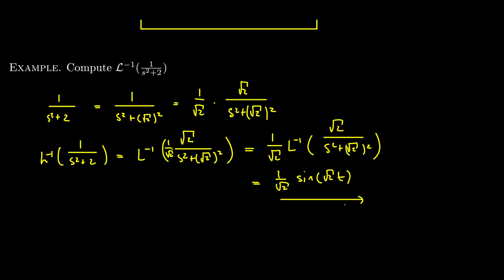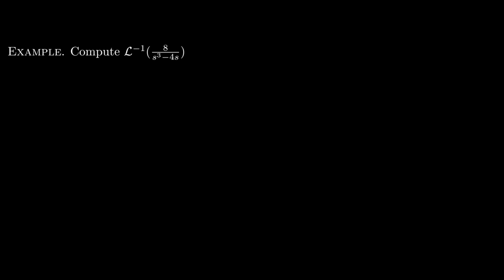This illustrates the general approach: we have a table and general rules, and we use them together to calculate inverse Laplace transforms just as we would for Laplace transforms. The next example is slightly more complicated but illustrates an important general technique. We need to find the inverse Laplace transform of 8/(s³ - 4s), which doesn't resemble any function in our table.